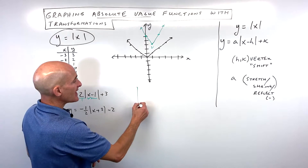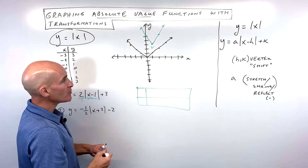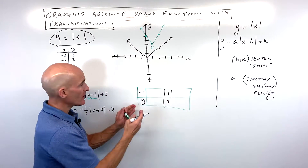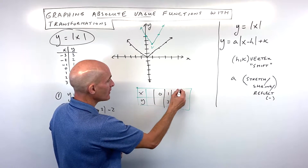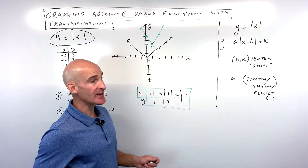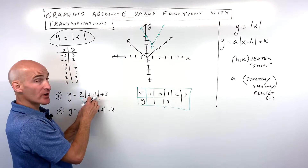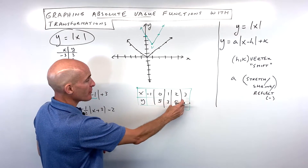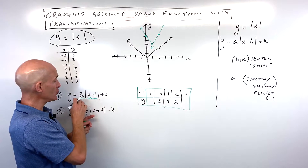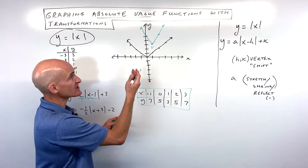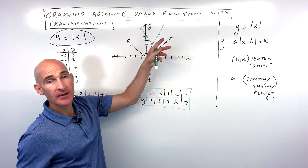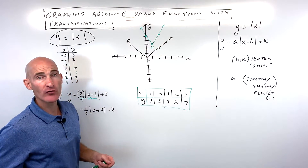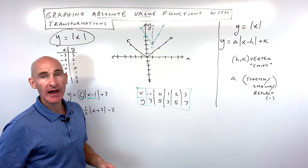Another way to do this is to make a table, which many students prefer. Place the vertex in the middle. Our vertex is at (1, 3). Then pick points on either side, such as x equals two and x equals zero, or x equals three and x equals negative one. For x equals two: two minus one is one, absolute value of one is one, times two is two, plus three is five. For x equals three: three minus one is two, absolute value of two is two, times two is four, plus three is seven. The symmetric points give the same y values. The 'a' value acts like a slope — rise over run — and once you find a point you reflect it over the line of symmetry that divides the graph in half.